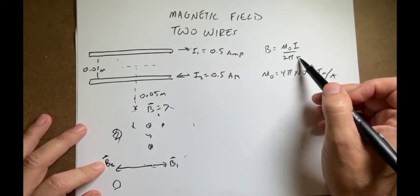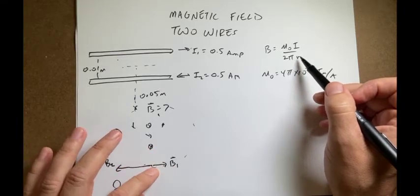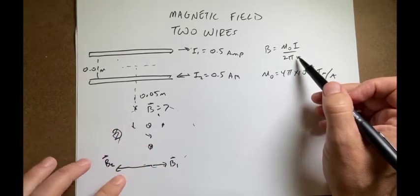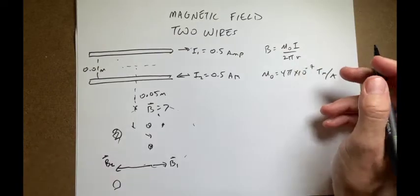and r is a distance from the wire. So since this spot is closer to wire 2, magnetic field 2 is going to have a greater value.